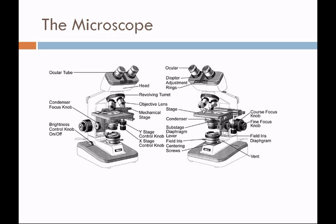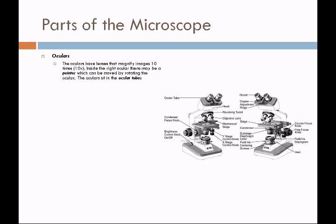This is a representation of the microscope that you'll be using in lab. We do have several different types of microscopes, and they all function the same, but their parts may be in a different place. Taking a look at the parts of the microscope, we're going to start at the top. The oculars are the eyepieces. They have lenses that magnify images ten times.